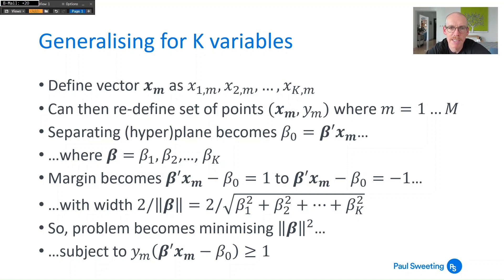And then the best separating hyperplane becomes β₀ equals bold β transpose xₘ where that bold vector β is β₁, β₂ all the way to βₖ. And the margin becomes β transpose xₘ minus β₀ equals 1. And the width of this is now 2 over the norm of that vector β or 2 over the square root of β₁² plus β₂² all the way to βₖ².